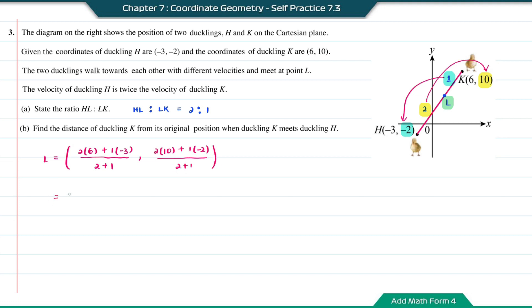So this will equal 9 over 3 and 18 over 3. Simplifying, the coordinate L will be (3, 6).